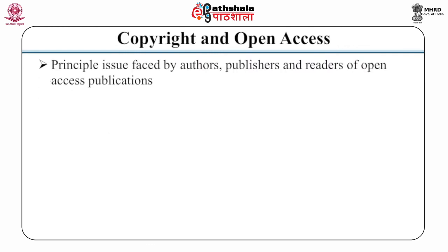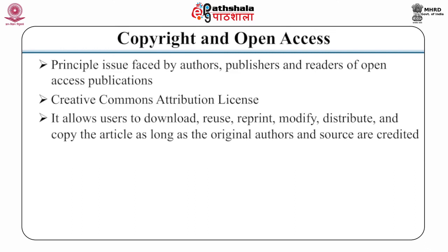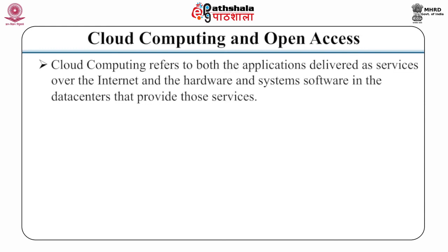Copyright is the principal issue faced by authors, publishers, and readers of open access publications. The work published in open access journals can be made available to the public under Creative Commons Attribution License, CCAL. CCAL gives the right to authors to retain their ownership of the copyright for their article. It also allows users to download, reuse, reprint, modify, distribute, and copy the article as long as the original authors and the source are credited. Cloud computing refers to both the applications delivered as services over the internet and the hardware and system software in the data centers that provide those services.